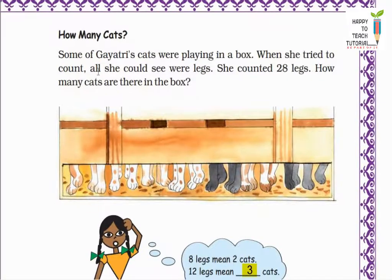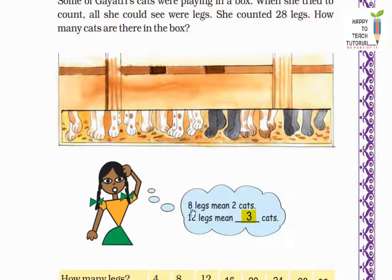Next is how many cats? Some of Gayatri's cats were playing in a box. You can see in this picture that some of Gayatri's cats were playing in a box. When she tried to count, all she could see were legs. She counted 28 legs. So how many cats are there in the box? A cat has 4 legs, so 28 divided by 4 is equal to 7 cats were there. Next, 8 legs mean 2 cats. So 12 legs mean how many cats? 12 divided by 4 is equal to 3 cats.